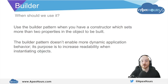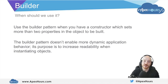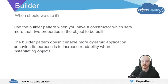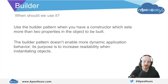So when should we use the builder pattern? We want to use it when you have a constructor that sets more than two properties in the object to be built. Two properties is fairly readable, but if you're setting multiple properties — a good rule of thumb is three or more — you should at least consider the builder. Note that the builder pattern does not enable any more dynamic application behavior or complicated functionality; it's really a creational pattern. Its purpose is to increase readability when instantiating objects. Remember that code is meant to be read, not written, so you need to make sure the person looking at your code in the future can understand your intent without jumping through the mental hoops of going back to the constructor's definition and understanding all of those positional-based arguments.